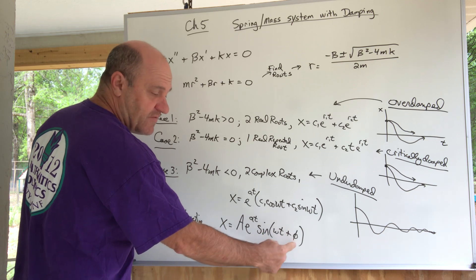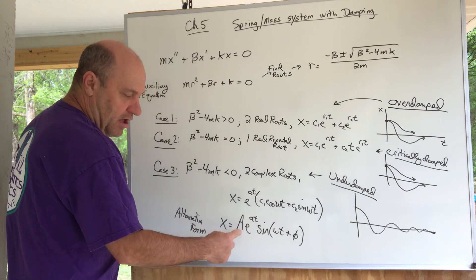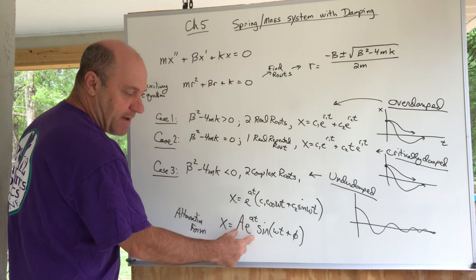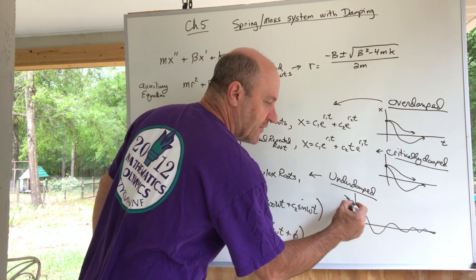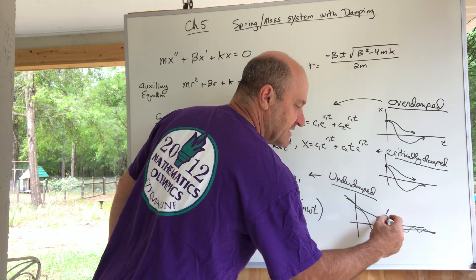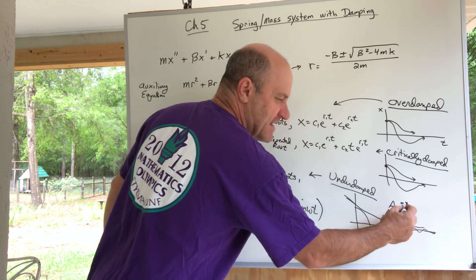That amplitude multiplied by this e function is a diminishing amplitude. In fact, it's this diminishing amplitude, and this is actually the A e to the at—that a will be negative—and there'll be a decreasing exponential function on either side of this.